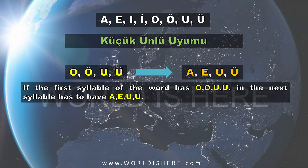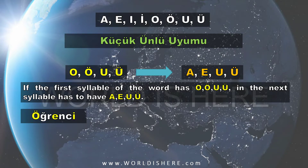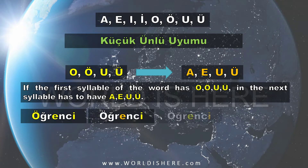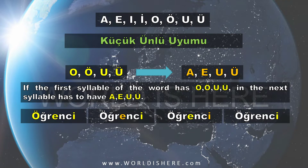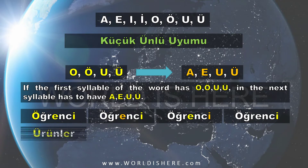We also studied that if the first syllable has O, Ö, U, or Ü, the next syllable has to have A, E, U, or Ü. For example, öğrenci — the first vowel is Ö, so the next vowel should be A, E, U, or Ü. The next vowel is E, and then checking E: after E the next syllable should have A, E, U, Ü, or İ. The next vowel is İ, so küçük ünlü uyumu is working here too. If you don't know this, please check that video where I explained everything in detail.